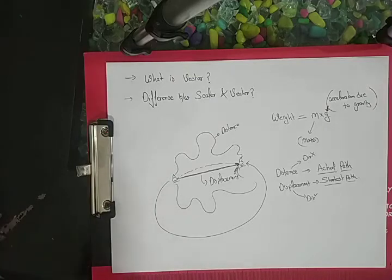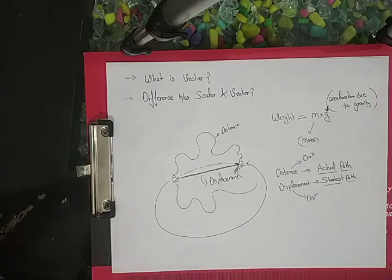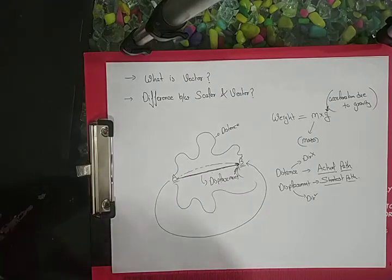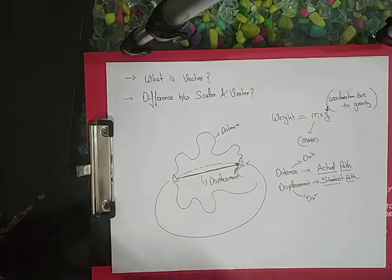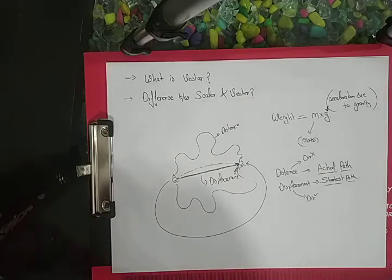And that is what scalar and vector is. Let me discuss one thing: what we call 'something' - molecules, mass, value - that is called the magnitude, and direction is the direction. Things which have only magnitude, they are called scalar quantities.